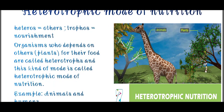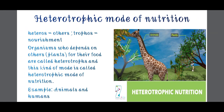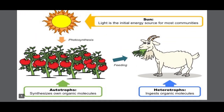In this figure you can see a giraffe eating tree leaves. So here the tree becomes the autotroph, and the giraffe becomes the heterotroph - the heterotroph depends on plants because it cannot make its own food. This type of mode is known as heterotrophic mode of nutrition. In the pictorial view, you can see the sun and some plants taking sunlight, because sunlight is necessary for them to prepare their food.